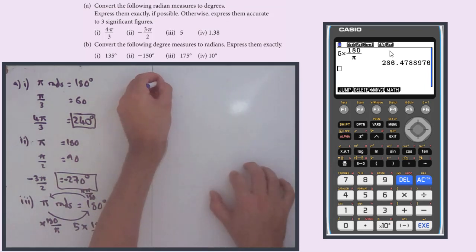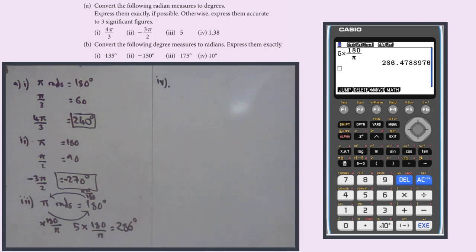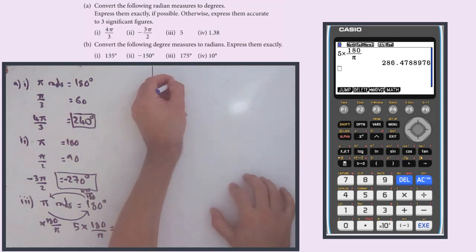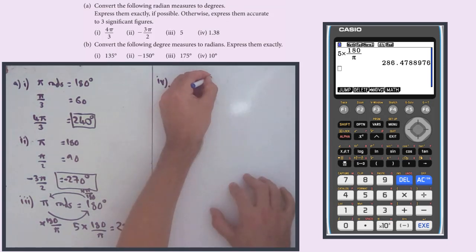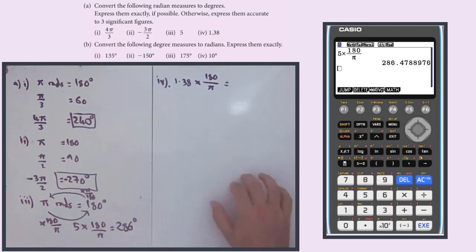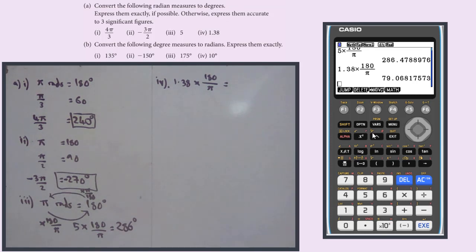Part 4. 1.38 radians. Well, I definitely aren't going to be able to do that one exactly. So I'm just going to use this conversion factor. I'm going to say 1.38 times 180 over π. And that equals, that gives me an answer. Remember, 3 significant figures of 79.1 degrees.